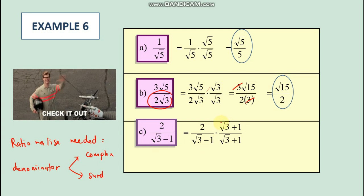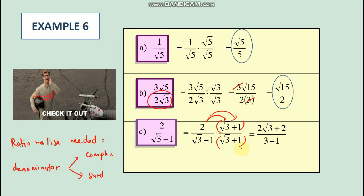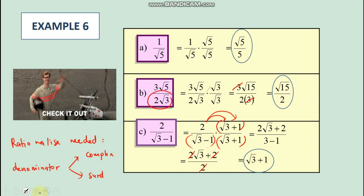For 2/(√3 − 1), the conjugate of √3 − 1 is √3 + 1. So we multiply both numerator and denominator by (√3 + 1). Expanding the numerator gives 2√3 + 2. The denominator follows the (a+b)(a−b) pattern, giving 3 − 1 = 2. So the answer is (2√3 + 2)/2, and factoring out 2 leaves us with √3 + 1.